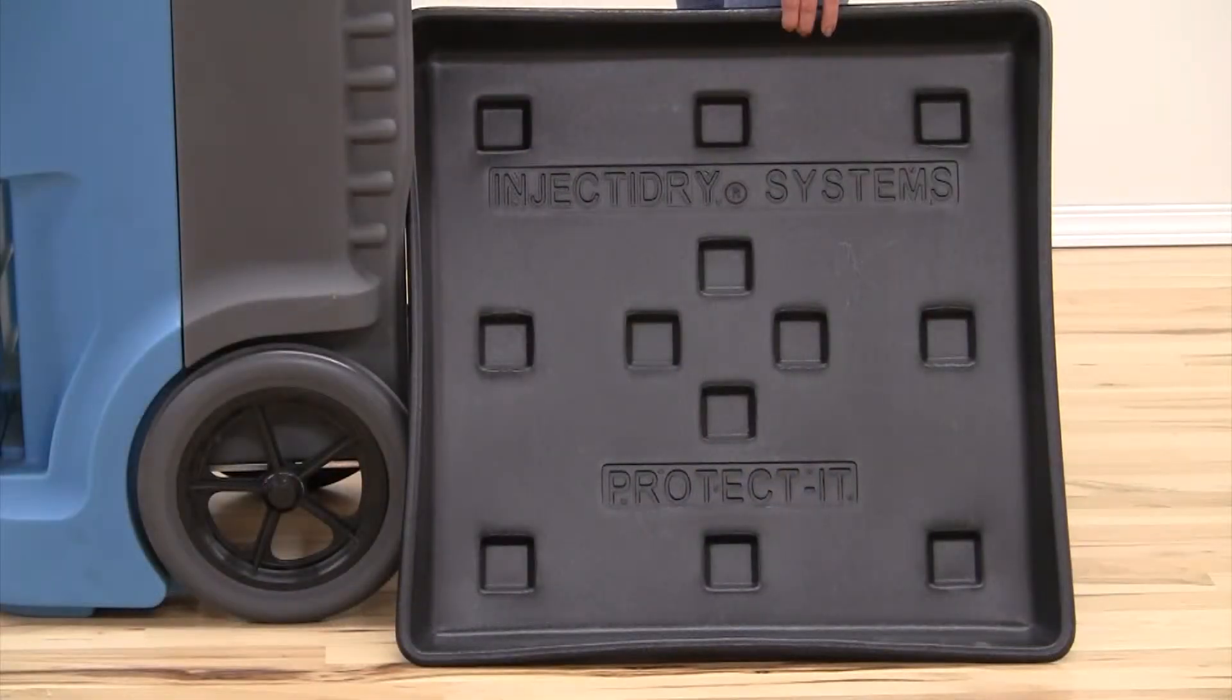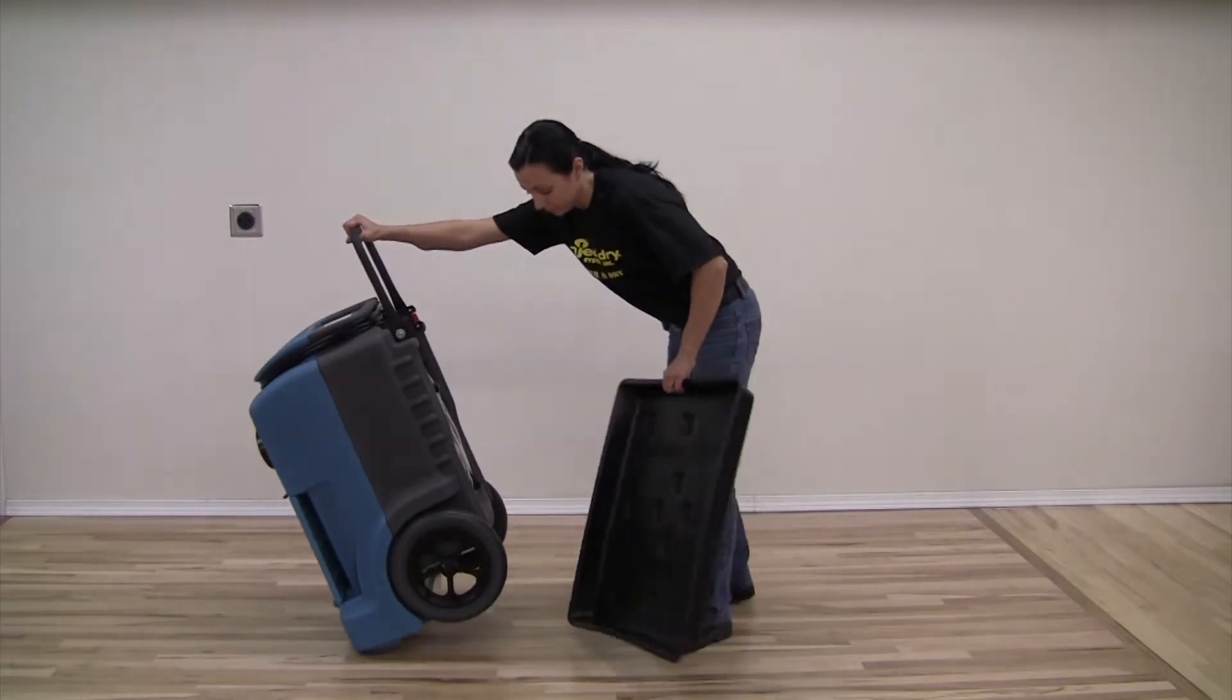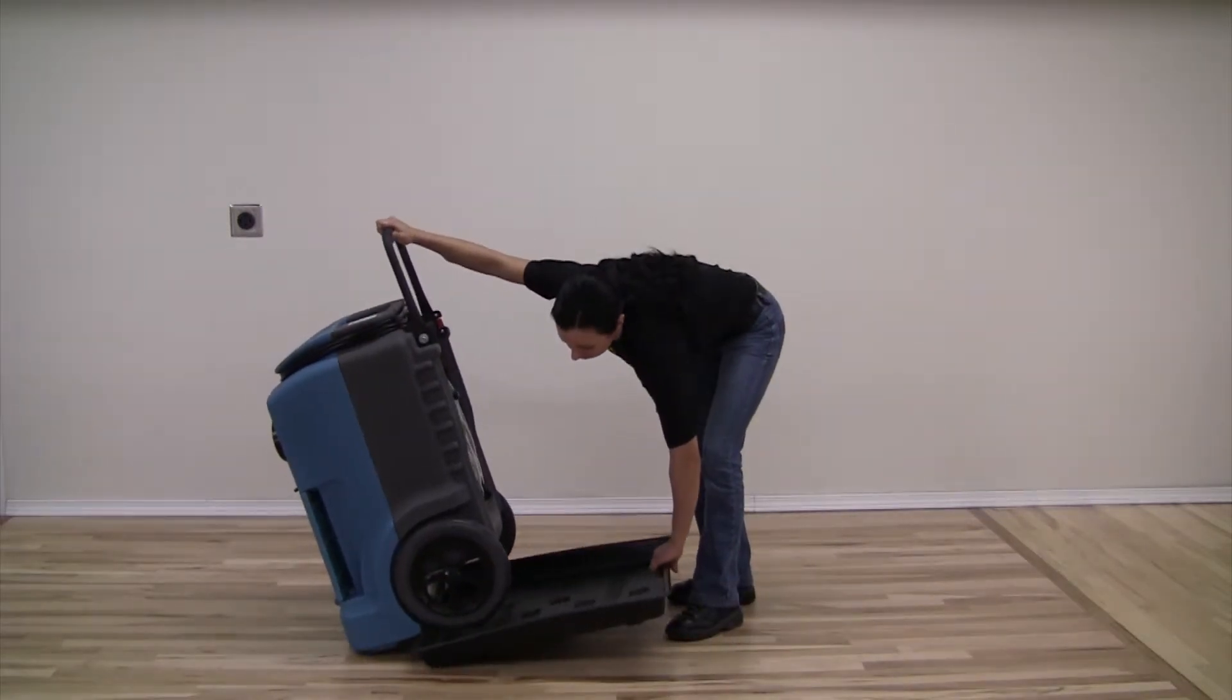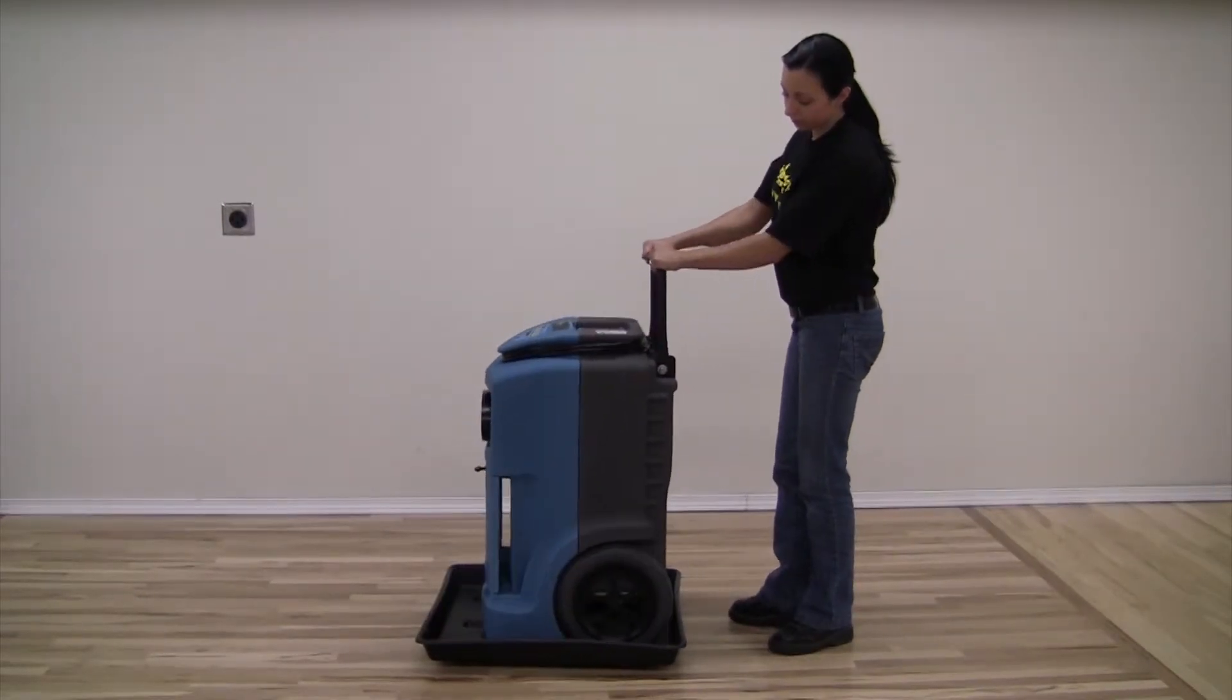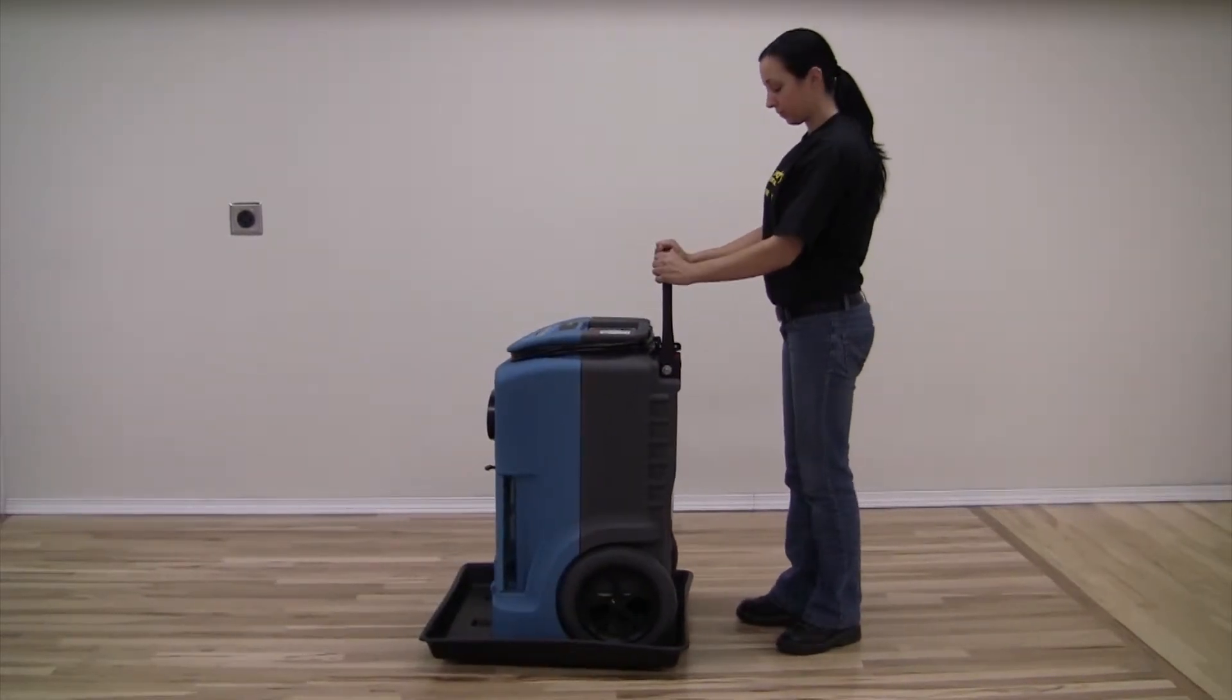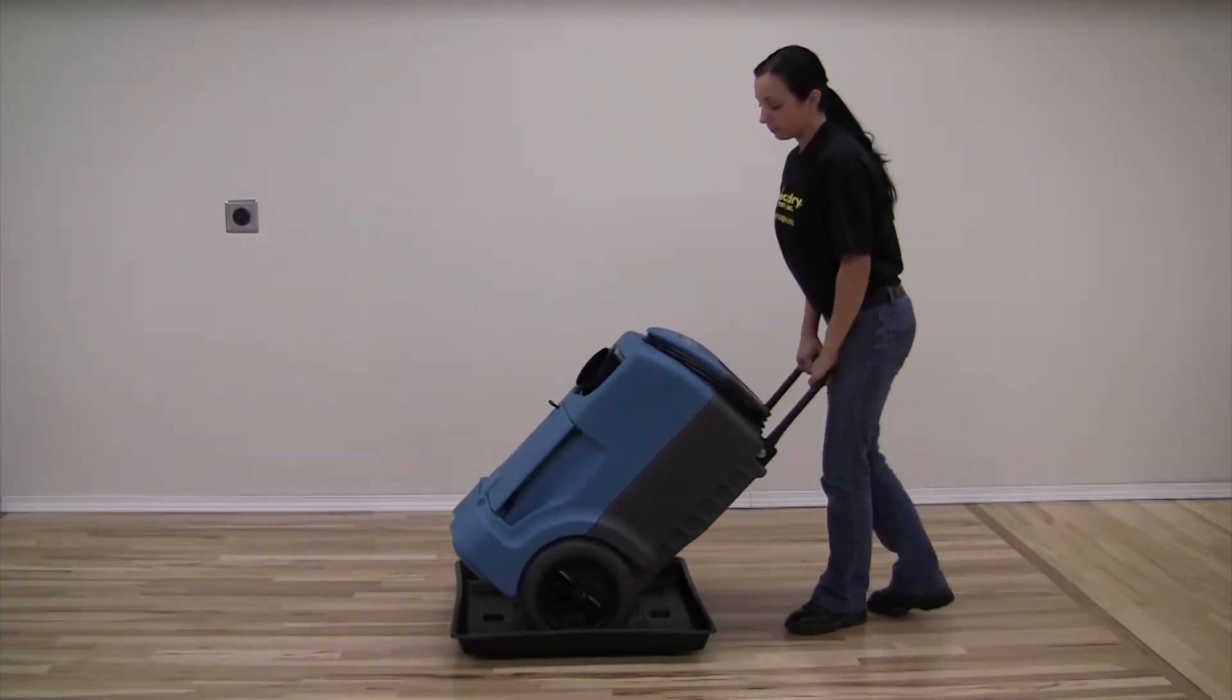Watch how easy it is to install. Simply tip the dehumidifier forward on its front legs, insert the protectant under the rear wheels, tilt the dehumidifier back on the rear wheels, and move the dehumidifier back so that it sits squarely in the protectant. To remove, simply reverse the process.